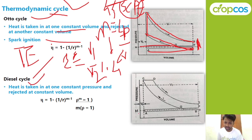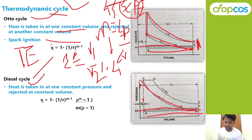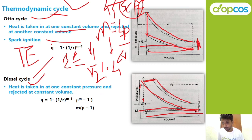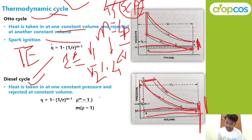Next is the Diesel cycle. Similarly, on the graph, MN is the atmospheric pressure line, AB is the inside suction pressure line, and B to C is compression where volume changes from V1 to V2. In the Diesel cycle, volume changes during compression, but C to D is at constant pressure — heat is taken at constant pressure. D to E is the power stroke with the piston moving down. E to F is a straight line representing heat rejection at constant volume.